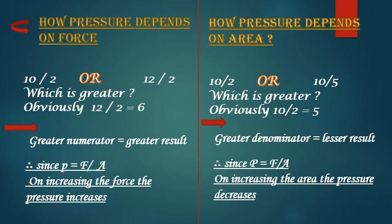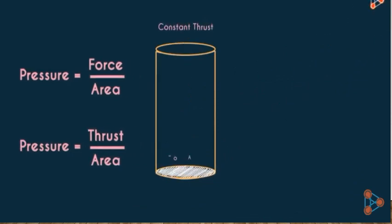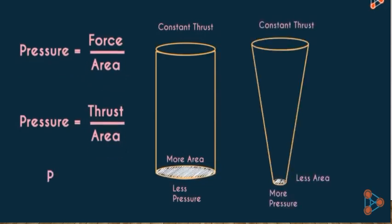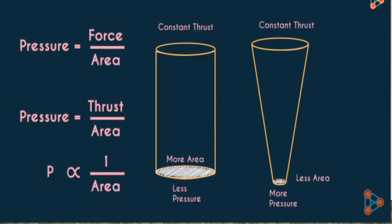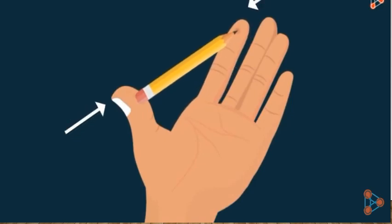Now let us take another example. If we divide 10 by 2 and then divide 10 by 5, which gives the greater result? Obviously, 10 by 2. So, greater the denominator, the lesser is the result. Since area is in the denominator side, on increasing the area, the pressure decreases. To conclude: pressure depends on two factors — the thrust applied and the area. On increasing the thrust, the pressure increases, while on increasing the area of the surface, the pressure decreases.